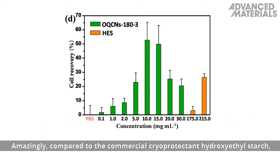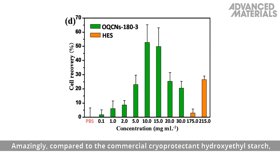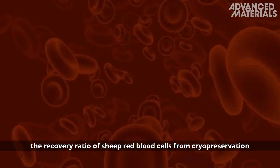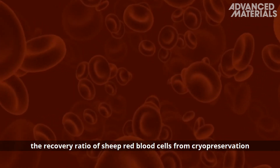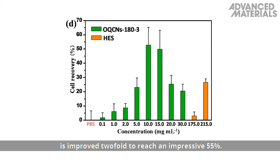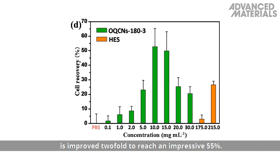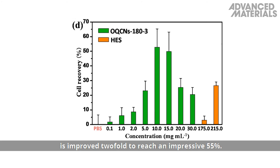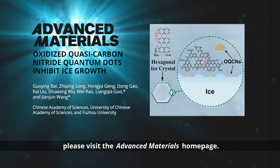A low cytotoxicity allowed for investigating OQCNs as cryoprotectants in cell preservation. Amazingly, compared to the commercial cryoprotectant hydroxyethyl starch, the recovery ratio of sheep red blood cells from cryopreservation is improved twofold to reach an impressive 55 percent. To learn more about this promising cryoprotectant, please visit the Advanced Materials homepage.